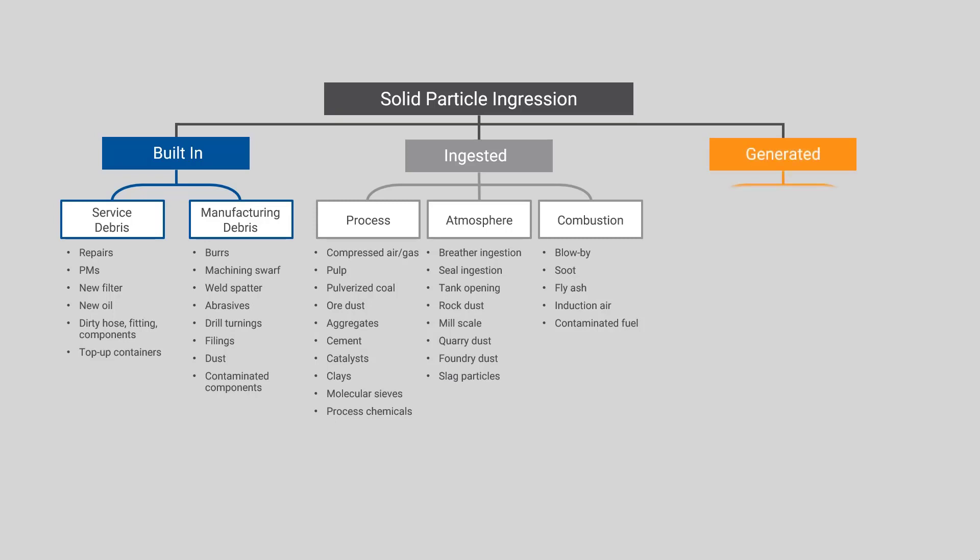And then finally, we have particles that are generated. Now, generated particles could be wear debris. These are particles that are produced as the machine is running, and we have a wear mechanism that is producing solid particles. It could also be degradation byproducts. Think about oxidation that creates sludge and tar. These are particles that are produced or generated because of some breakdown process.